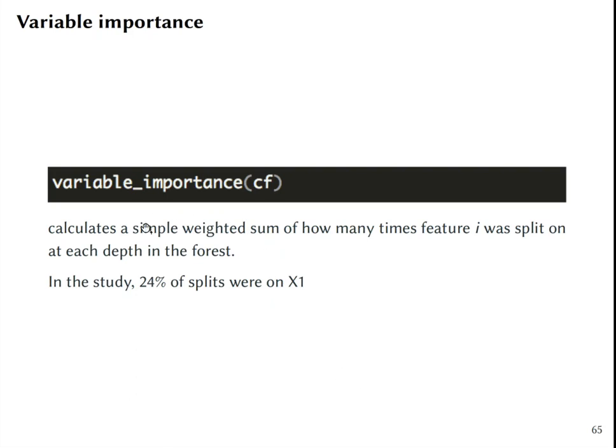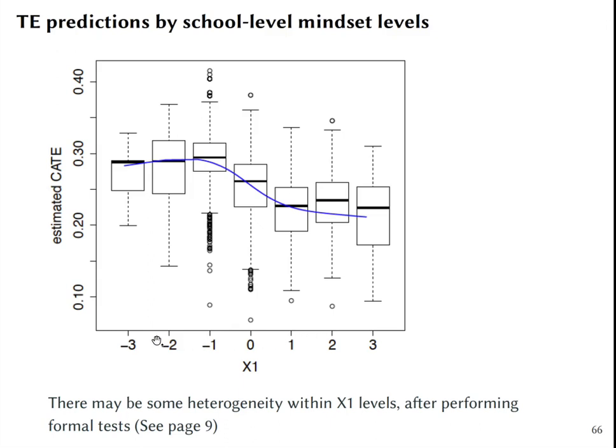Finally, you can ask to provide us with a table of variable importance. It calculates a simple weighted sum of how many times feature i was split at each depth by the causal forest. And in this study it spits out that 24% of splits were done on x1, which is the share of people with fixed mindset in a school. And then they look at the heterogeneity with respect to x1. What would be the predictions of the causal forest for someone with different values of x1? And then they find that, yes, it may look like that someone who was treated in a school where there's a higher share of people with fixed mindset. This learning mindset intervention might have been not so effective as in the schools where already many students had learning mindset.